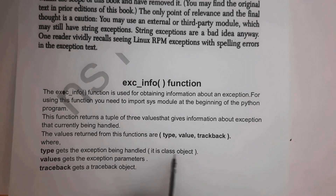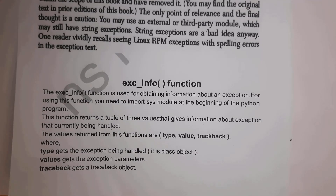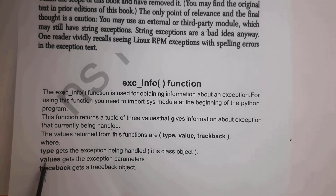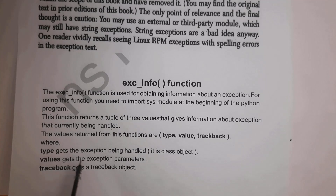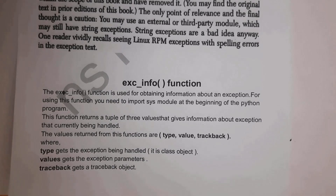The tuple contains three values: first is type, next is value, and third is traceback. Type is basically a class object — it gets the exception being handled. For example, if ZeroDivisionError occurs, type will display 'class ZeroDivisionError'. Values give the exception parameters, and traceback gets a traceback object.